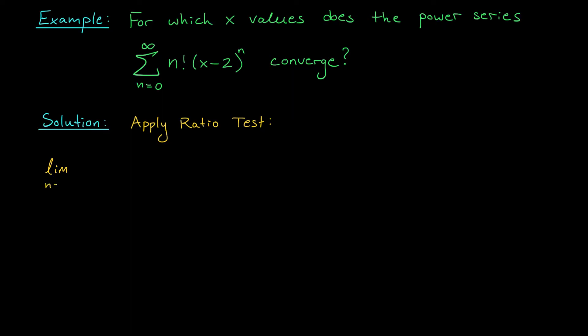To apply the ratio test, we have to compute the limit as n tends to infinity of a_{n+1} divided by a_n in absolute value. In this case, it looks like we get the limit as n tends to infinity of the absolute value of n plus 1 factorial times x minus 2 to the n plus 1 divided by n factorial times x minus 2 to the n. Just like before, we have some cancellation. We get the limit as n tends to infinity of n plus 1 times the absolute value of x minus 2. Okay, well, check this out. When n goes off to infinity, n plus 1 is going to blow up to infinity as well. If I then multiply by a positive constant, the result will still be equal to infinity. Right? Yeah, almost. But there's one exception here.